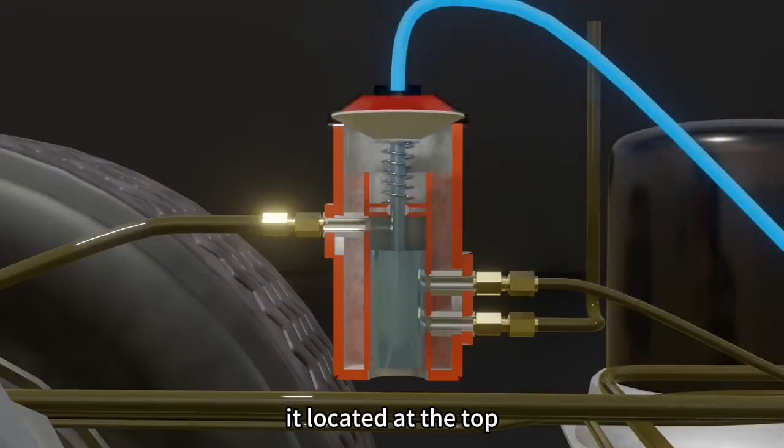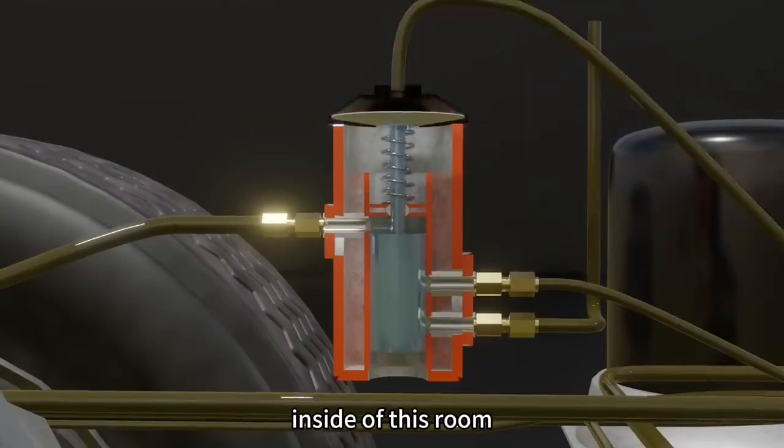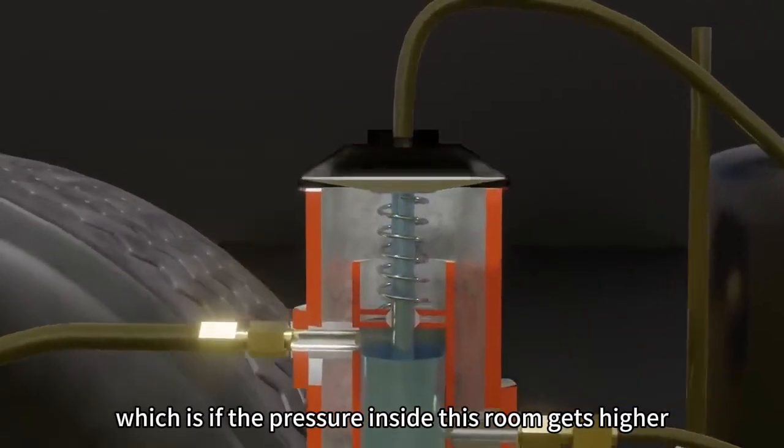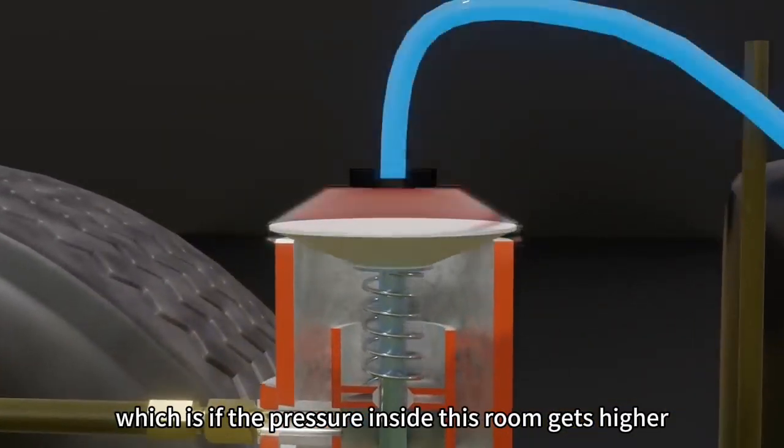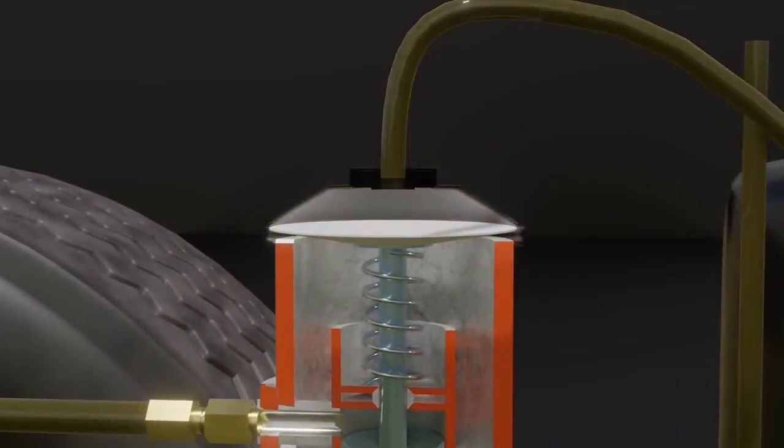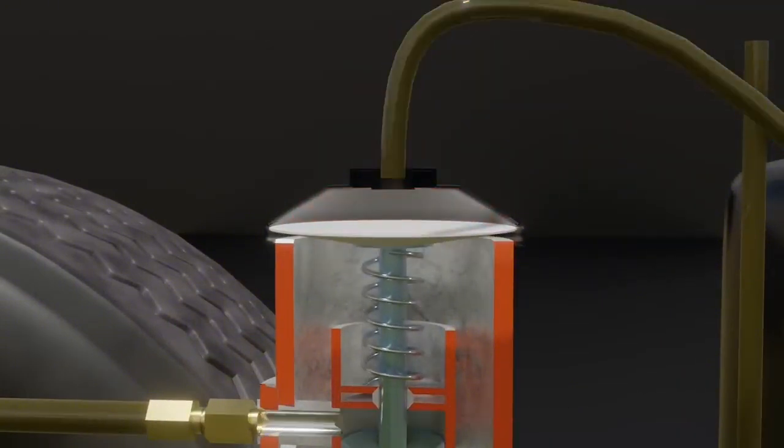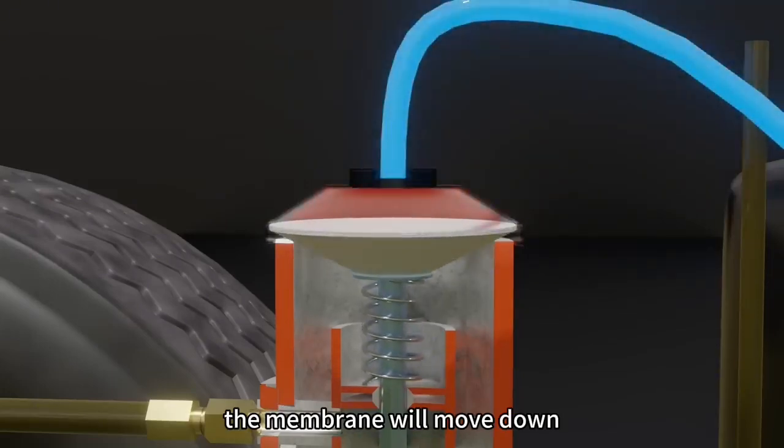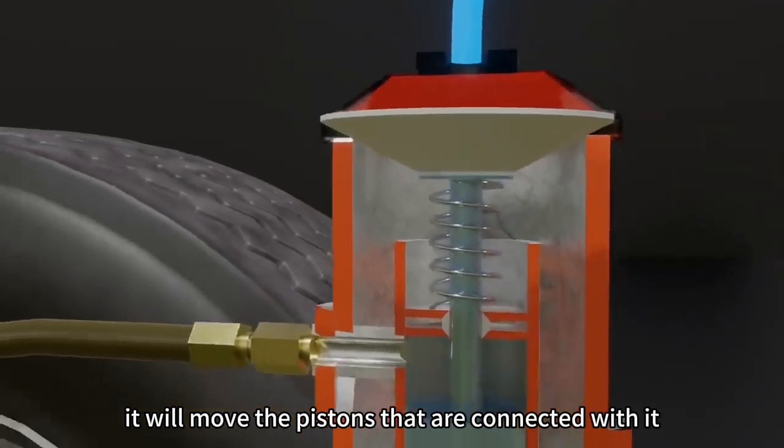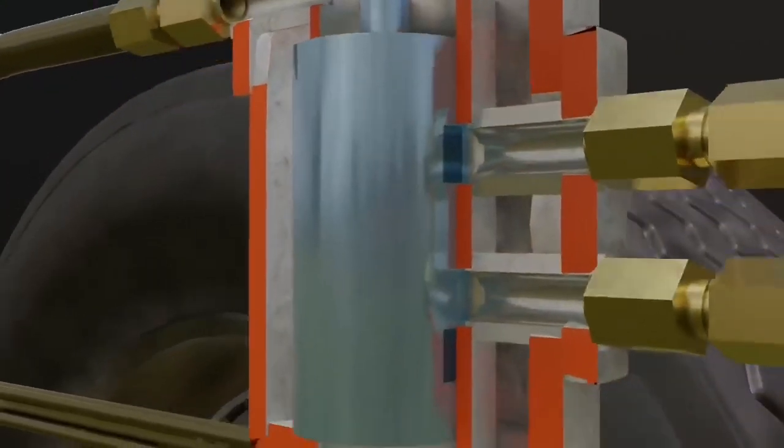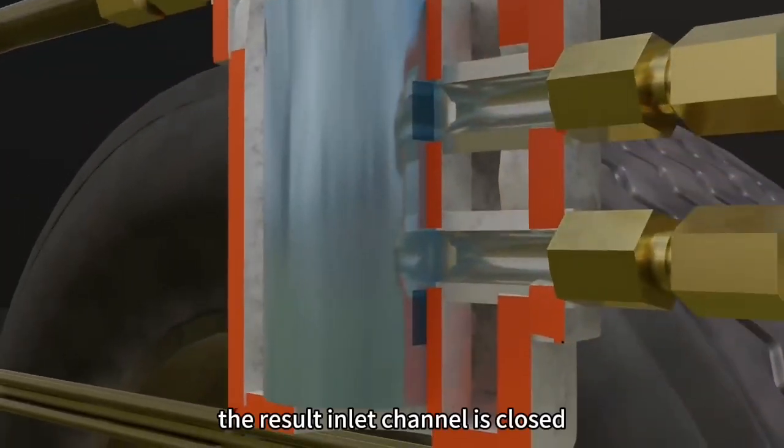It's located at the top. Inside of this room, there is a membrane which if the pressure inside this room gets higher, it will automatically close the inlet channel. The maximum pressure is 150 psi. If it exceeds the pressure, the membrane will move down. It will move the pistons that are connected with it. As a result, inlet channel is closed and the channel from air dryer is opened.